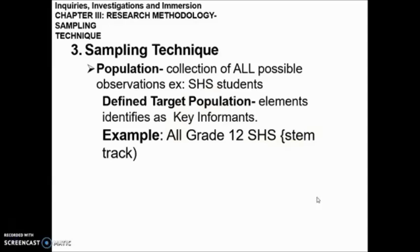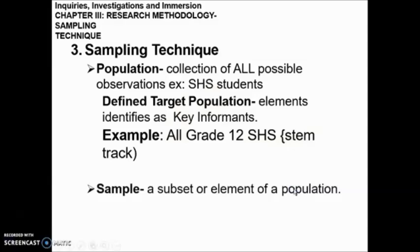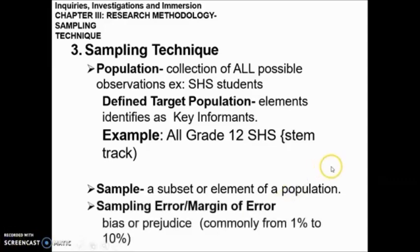This target population will be considered in our sampling technique. A sample is a subset or element of a population. If you have already identified the target population — for example, 10,000 Grade 12 students with STEM track — then from those 10,000 you will get a sample, which is less than 10,000. To do that, we use a sampling error or margin of error, which is the bias or prejudice, commonly ranging from 1% to 10%.